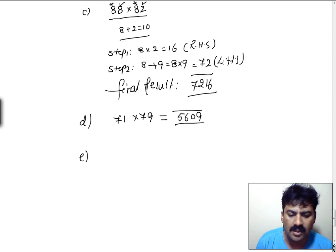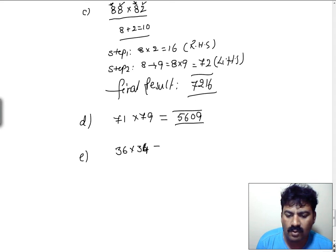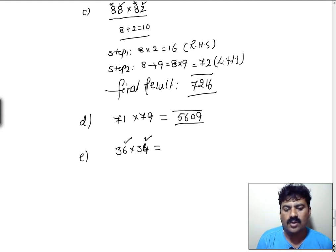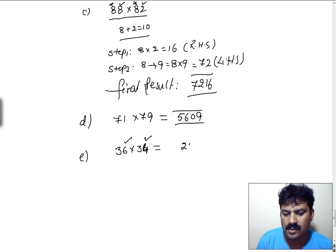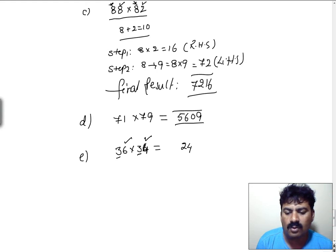One more example: 36 into 34. In this case, 6 and 4 — 6 plus 4 is 10. 6 into 4 is 24, which is the rightmost answer. And for the 3, the next digit is 4. 3 into 4 is 12. So 1224 is the final answer.